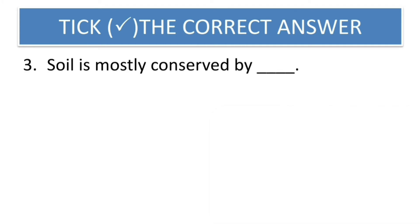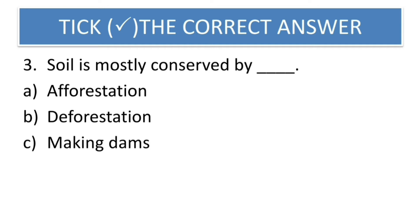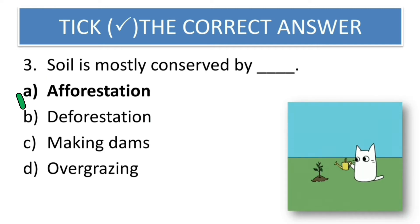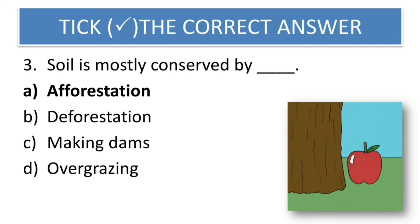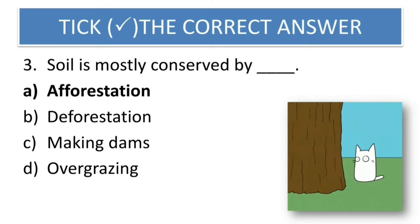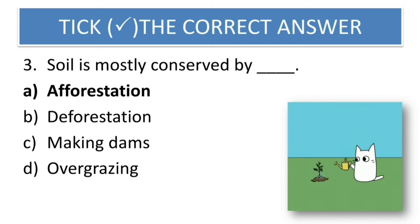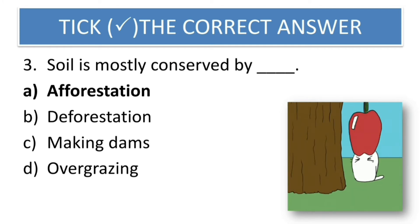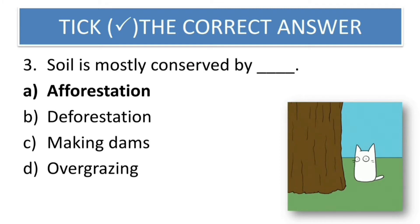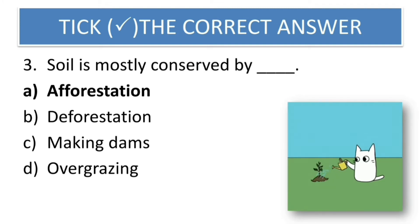Third question: Soil is mostly conserved by — afforestation. When you plant more trees, it will conserve and save the soil. Conservation means saving something. So if you want to protect the soil, afforestation is the solution. The meaning of afforestation is to plant more and more trees.